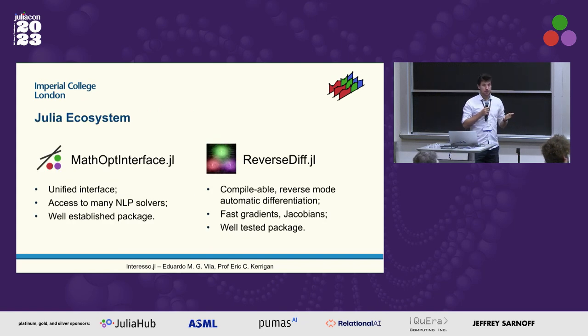What packages have I been using for this IntraEso? I've been using MathOpt interface more recently to be able to plug and play different optimization algorithms. This is a very well-established package and it allows for IntraEso to be somewhat future-proof as other solvers might come up. And to take care of the automatic differentiation, I'm actually using reverse diff. It allows us to get fast gradients and Jacobians.